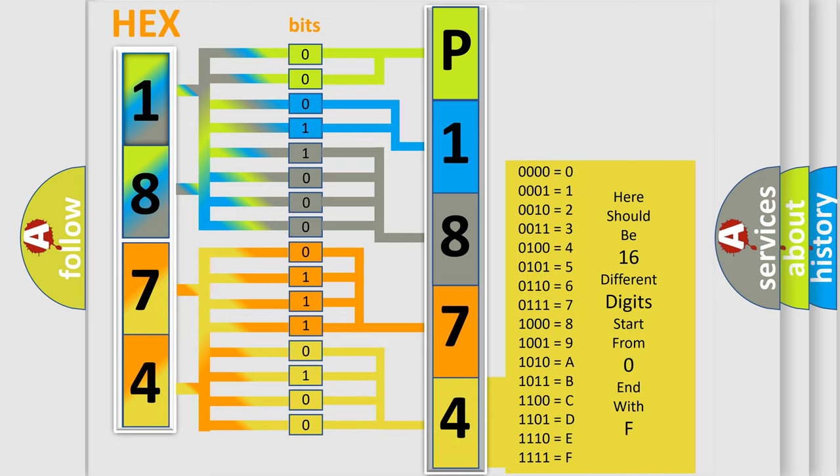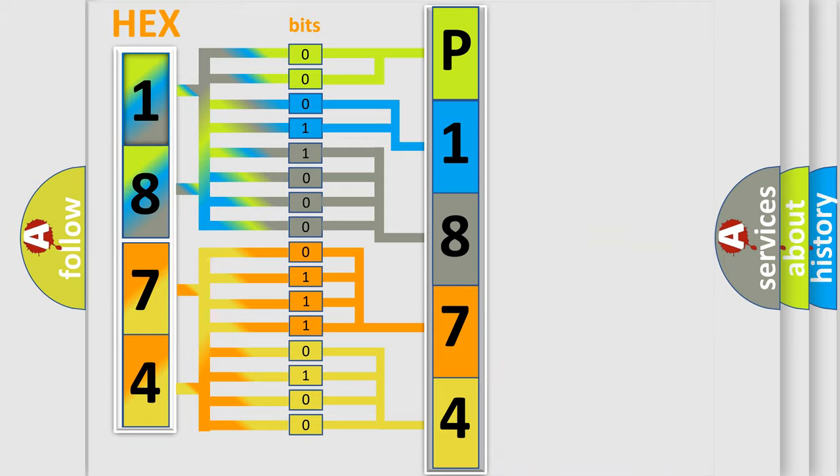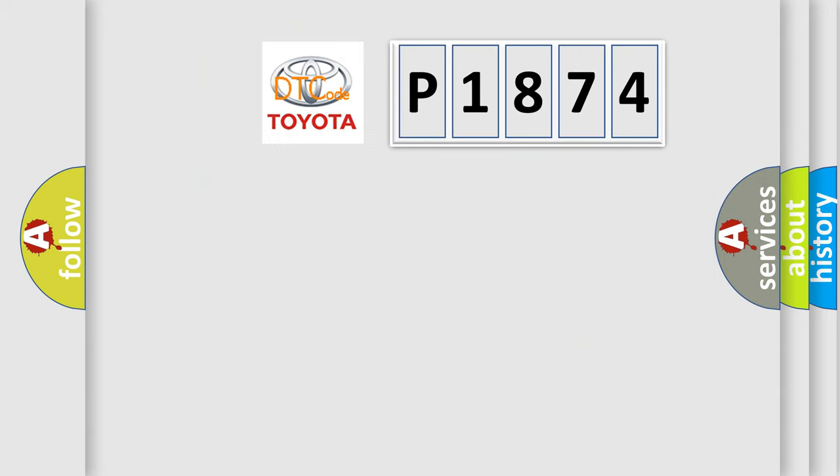We now know in what way the diagnostic tool translates the received information into a more comprehensible format. The number itself does not make sense to us if we cannot assign information about what it actually expresses. So, what does the diagnostic trouble code P1874 interpret specifically for Toyota car manufacturers?